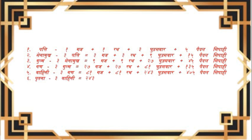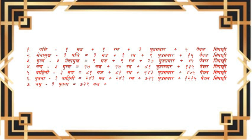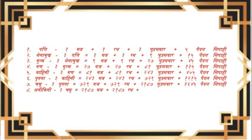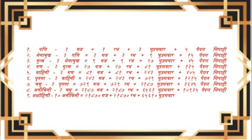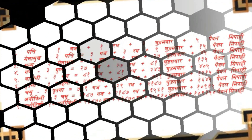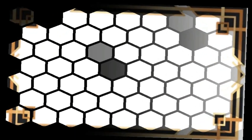विद्वानों के कथन अनुसार गणना: 1. पत्ती = 1 गज + 1 रथ + 3 घुड़सवार + 5 पैदल सिपाही। 2. सेनामुख (3 पत्ती) = 3 गज + 3 रथ + 9 घुड़सवार + 15 पैदल सिपाही। 3. गुल्म (3 सेनामुख) = 9 गज + 9 रथ + 27 घुड़सवार + 45 पैदल सिपाही। 4. गण (3 गुल्म) = 27 गज + 27 रथ + 81 घुड़सवार + 135 पैदल सिपाही।